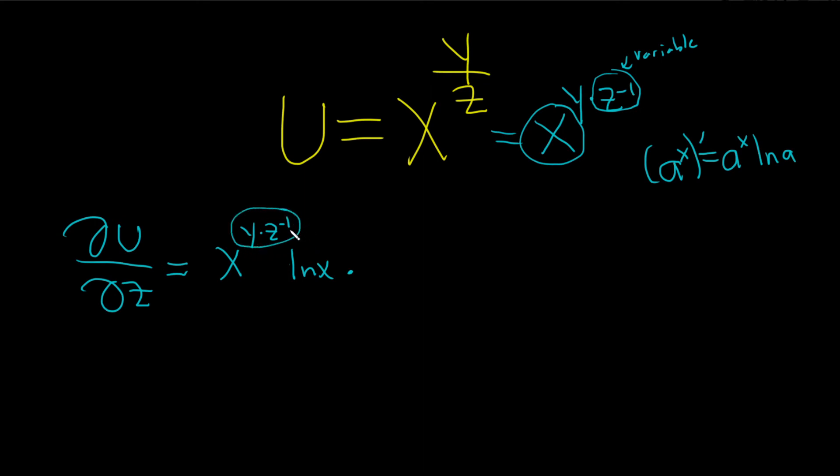So we're taking the derivative with respect to z. The y is a constant, so you bring down the negative, and then you get z to the negative 2, right? Power rule for derivatives.